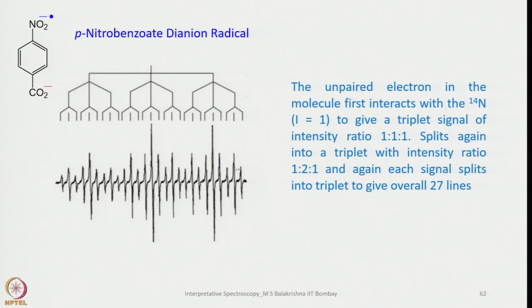Now let's look at nitrobenzoidyanide radical. Here we have CO2 on one side and NO2 on the other. The unpaired electron in the molecule first interacts with 14N (I=1) to give a triplet signal of intensity 1:2:1. Splits again, each signal splits into a triplet with intensity ratio 1:2:1, and again each signal splits into triplet to give overall 27 lines.